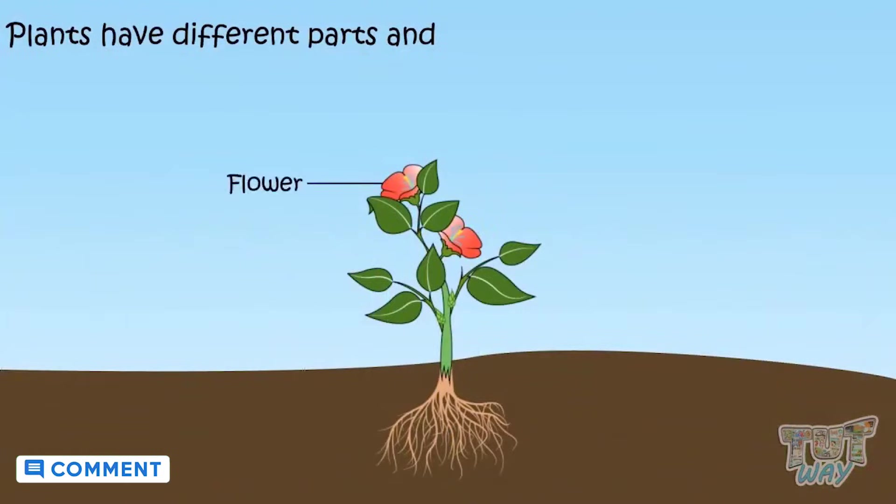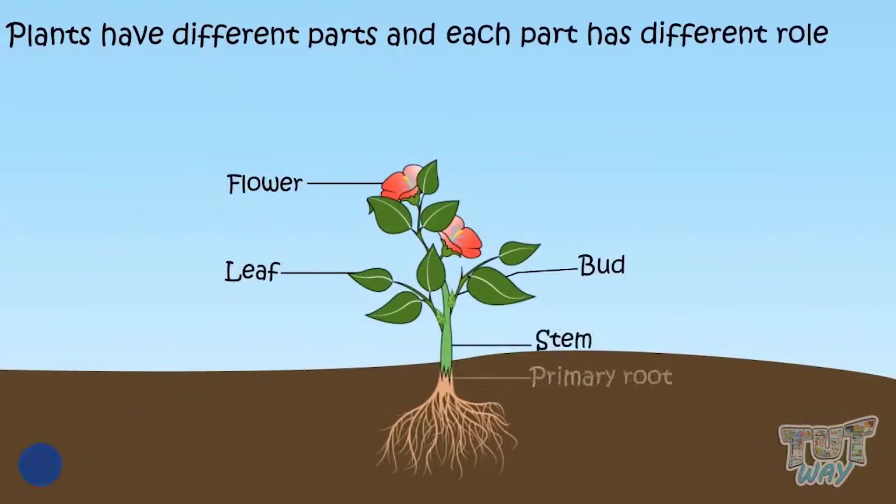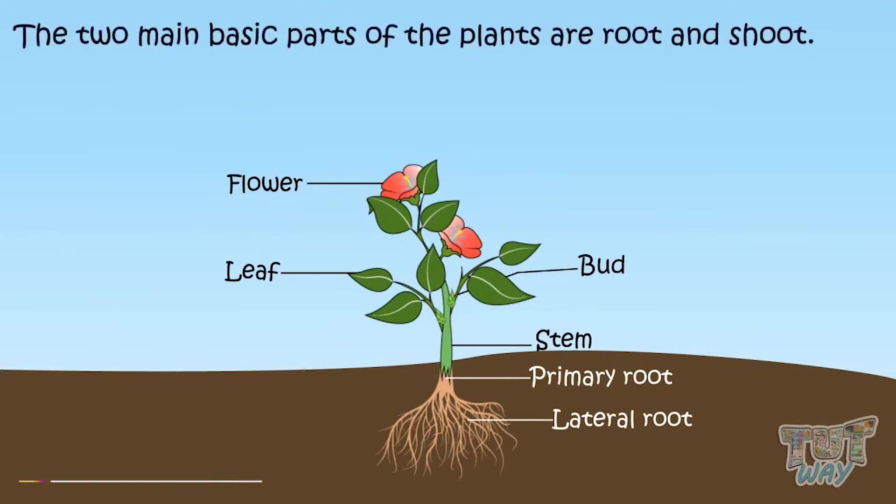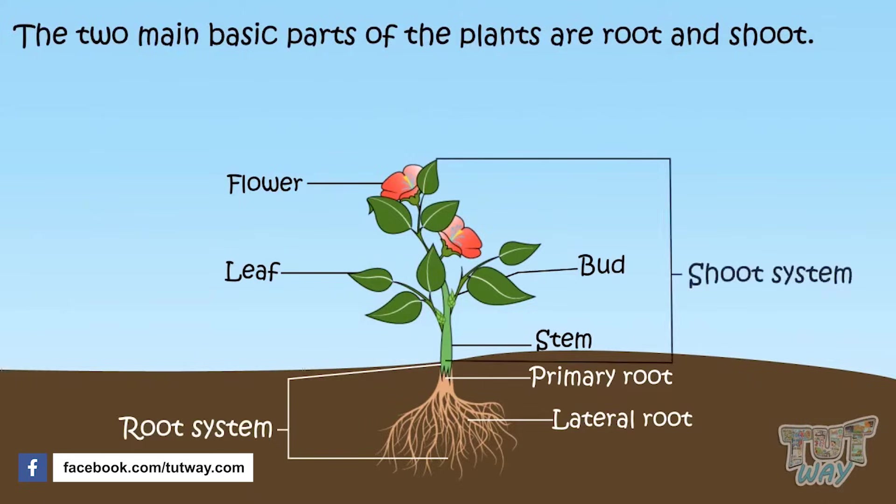Plants have different parts where each part has different roles to play. All plants have two main basic parts, that is, the root and the shoot.